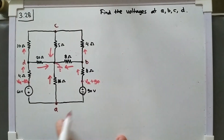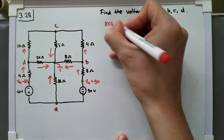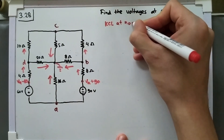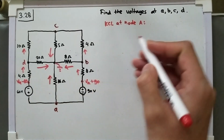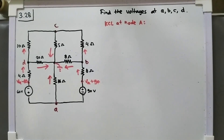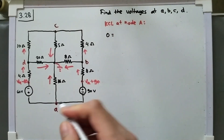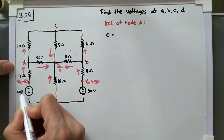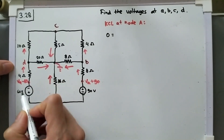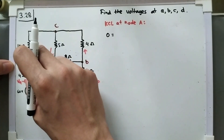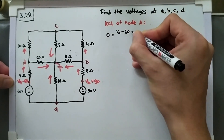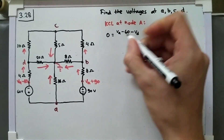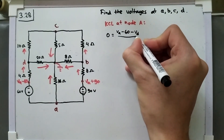We will start by calculating at node A — KCL at node A. The current that goes in equals the current that goes out. There is no current going in here, only going out, so I will write zero as the current in. The current going out can use this voltage source or these resistors, but the resistor is easier to calculate the current through.